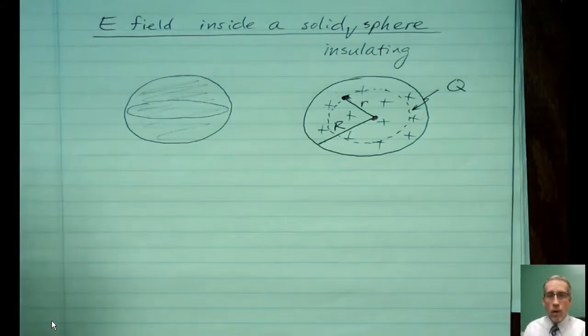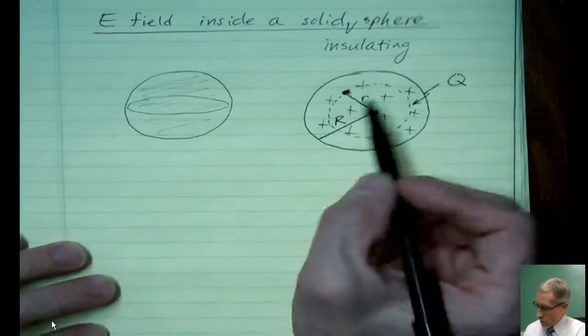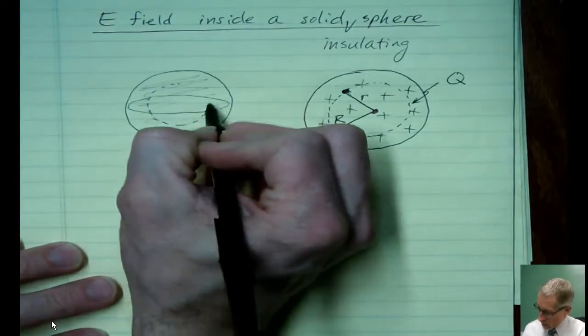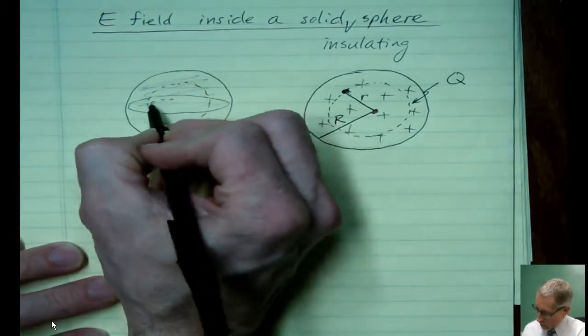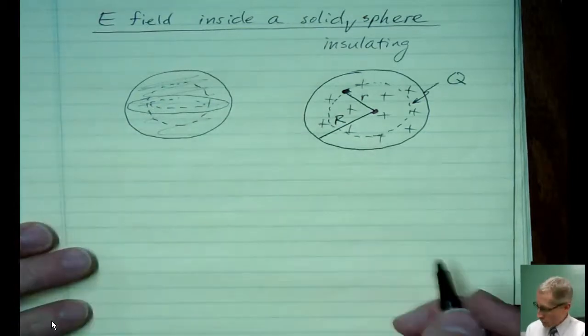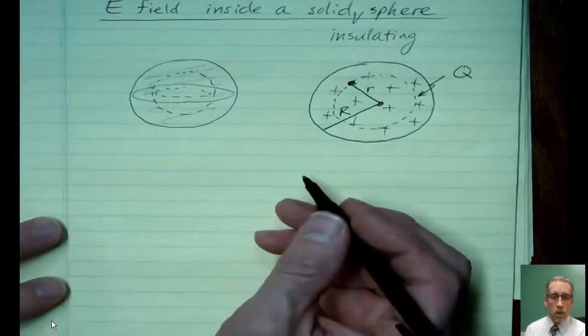And I always draw my Gaussian surfaces dashed. These are not real things. Like the sphere is very real, it's made of plastic. The Gaussian surface is just sort of an imaginary construct, we could call it, so that we can do Gauss's Law. So that's what that looks like. I don't really quite know how I can tell 2D from 3D. But it's like a ball inside of a ball.